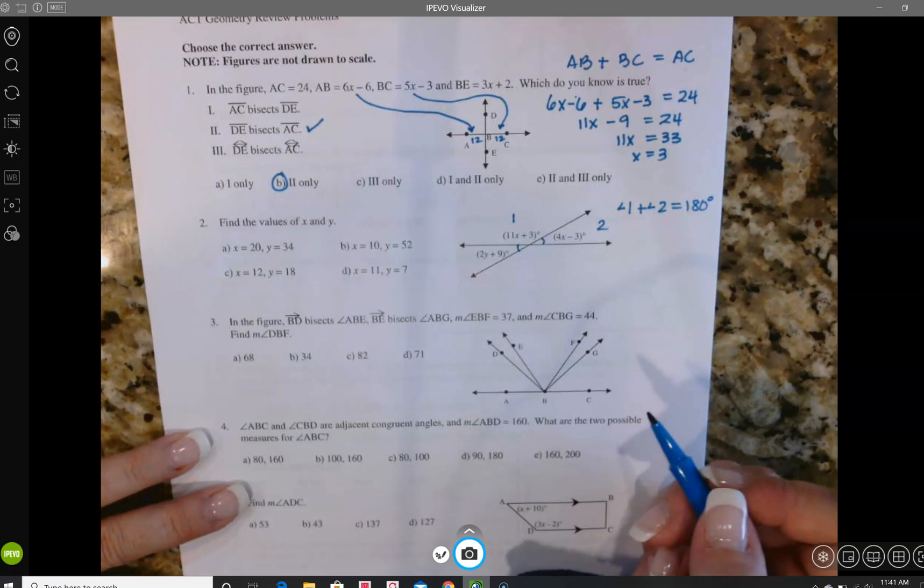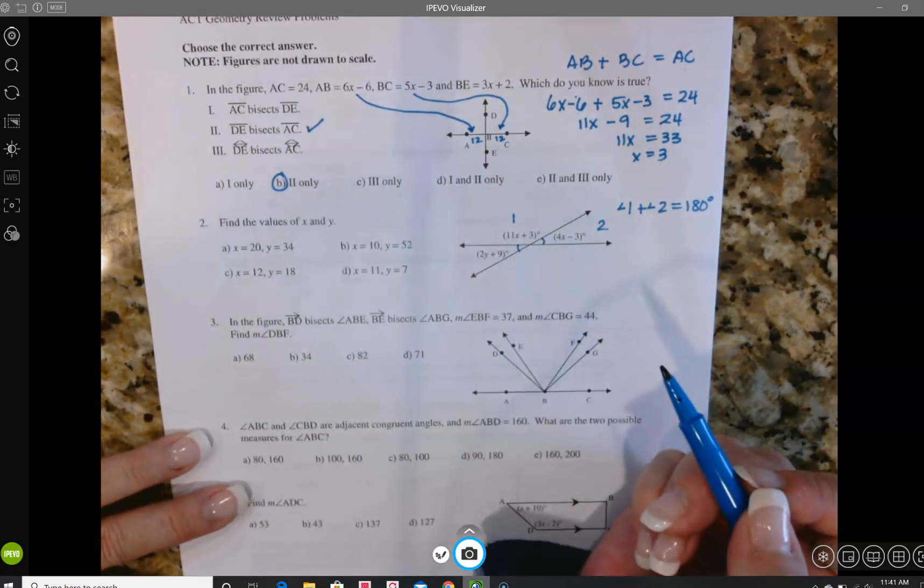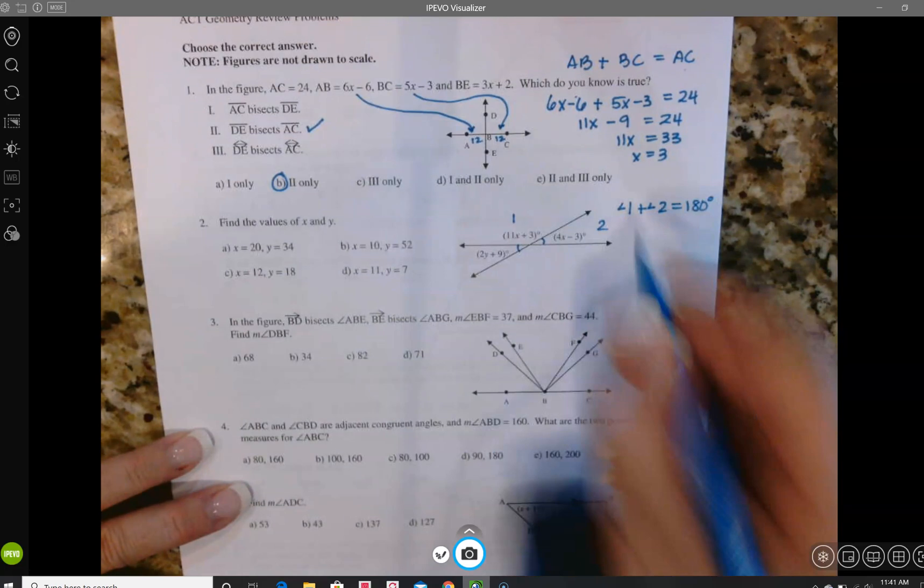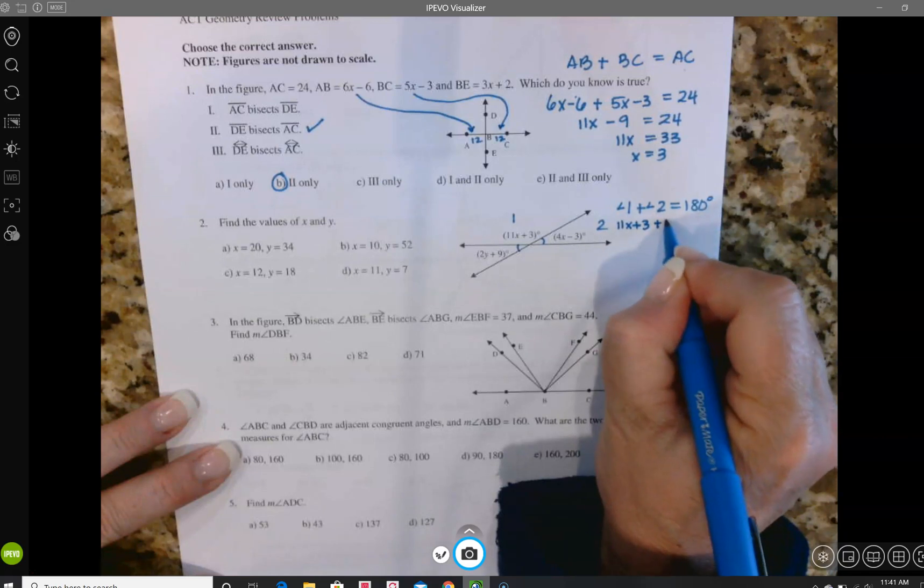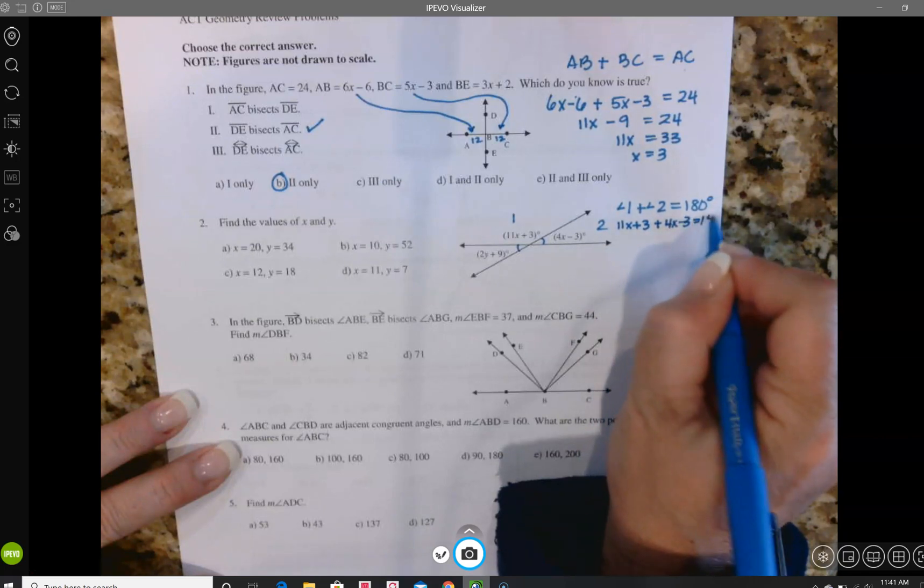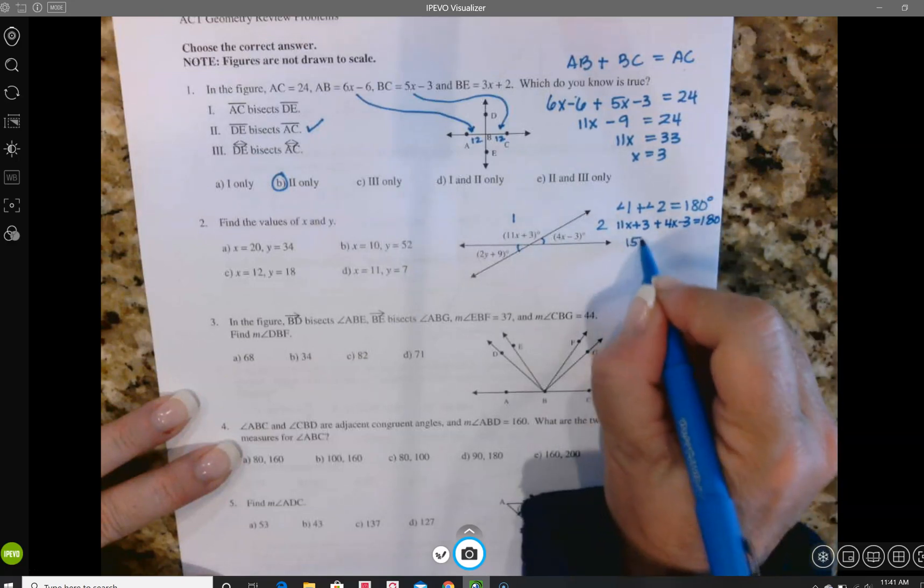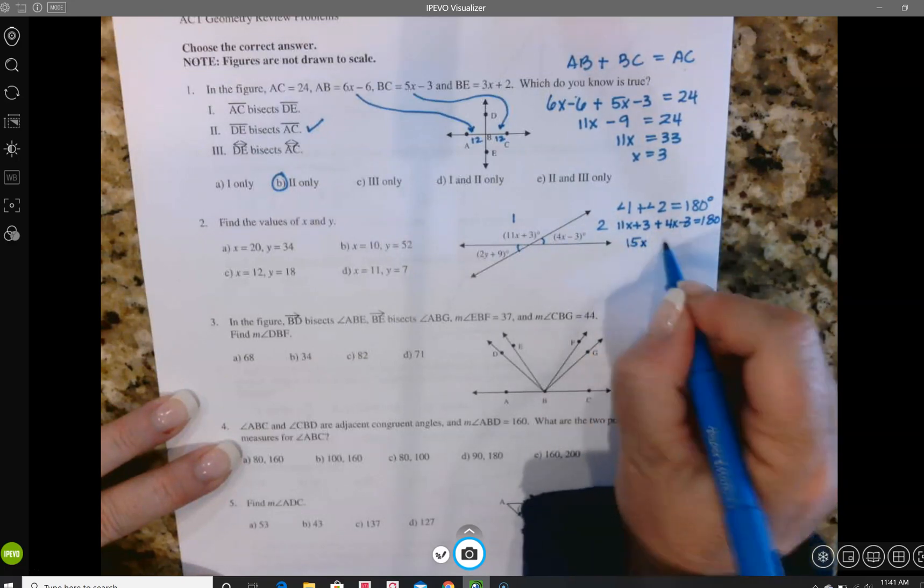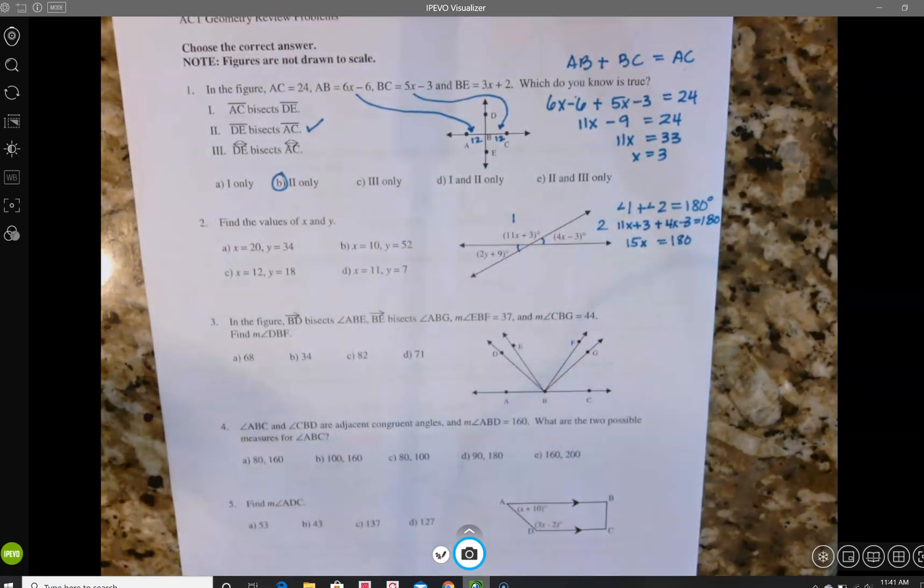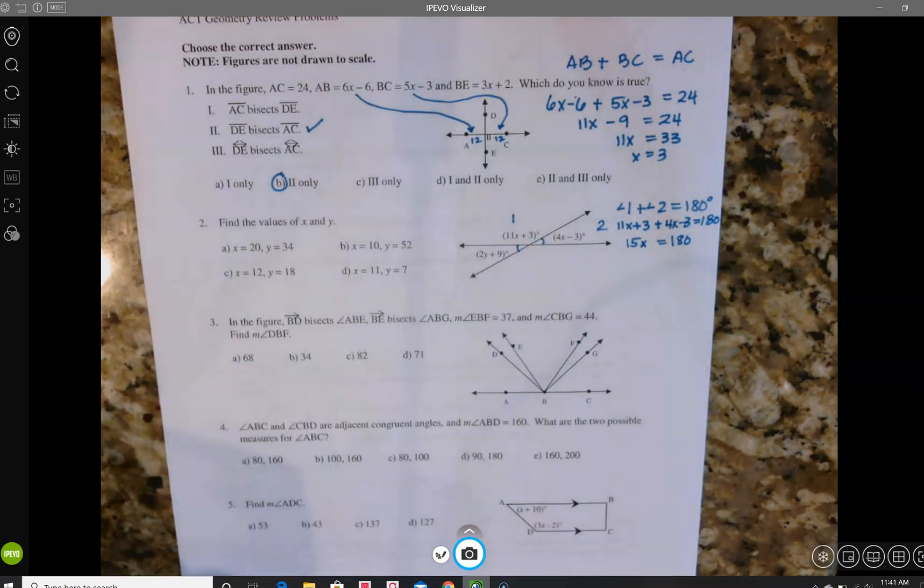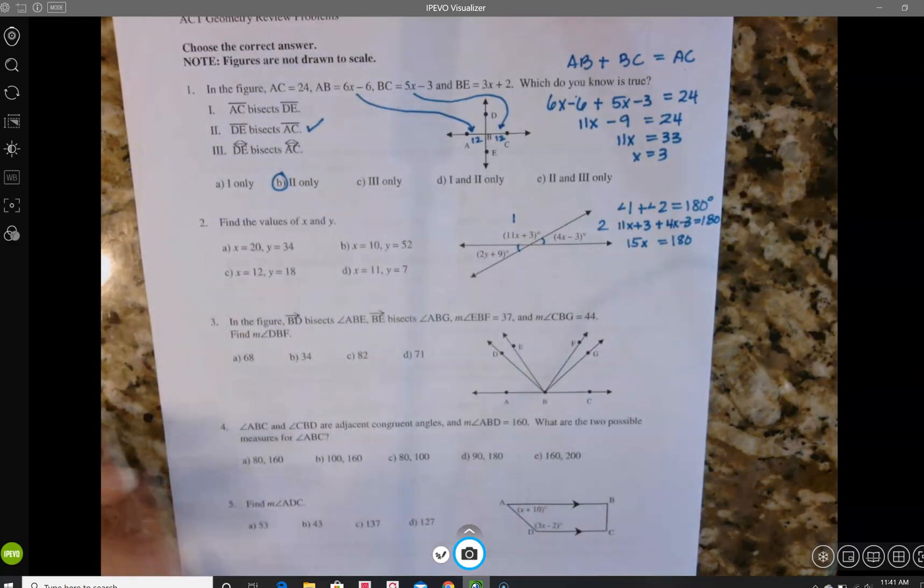So I'm going to have to use those linear pairs to be able to find what x is and then work my way around to finding what y is. So I'm going to take angle 1, 11x plus 3 plus angle 2 which is 4x minus 3, set them equal to 180. 11x and 4x that's 15x, plus 3 minus 3 cancels, equals 180. So now I need to use my calculator to find out what is 180 divided by 15. So I'm a little slow here, 180 divided by 15 that's going to equal 12, so I get x equals 12.